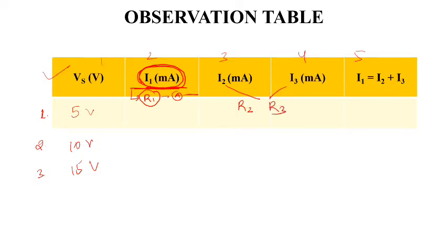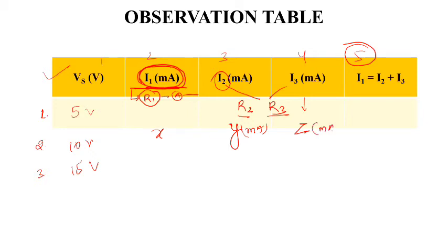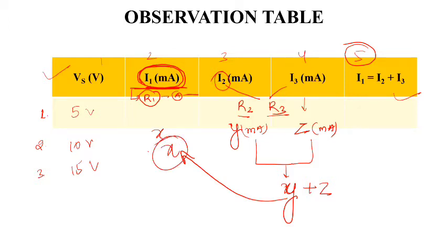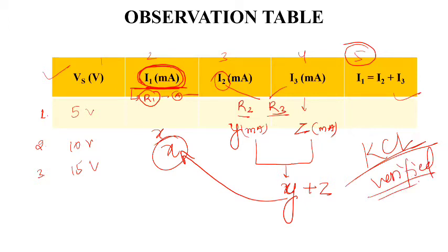Similarly, I2 and I3 will be calculated as the currents flowing through resistances R2 and R3 respectively. In the last column, we verify whether the sum of I2 and I3 is equivalent to I1 or not. If I2 equals y milliamperes and I3 equals z milliamperes, we check whether y plus z equals I1 (x). If it comes out equivalent, then Kirchhoff's Current Law has been verified.